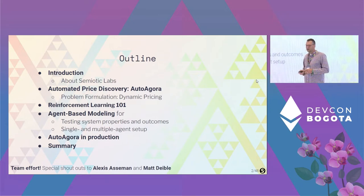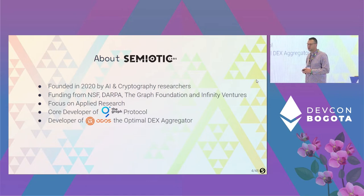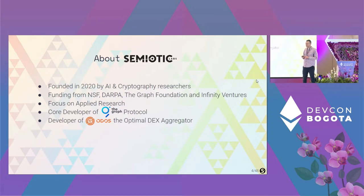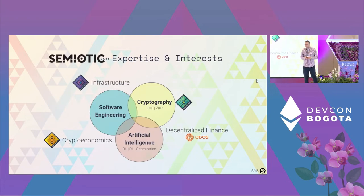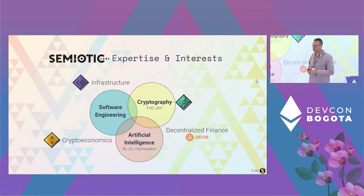Semiotic Labs was founded in 2020 by AI and cryptography researchers. We focus on applied research and are one of the core devs of The Graph protocol. We are also developers of Oros, the optimal DEX aggregator. Our core expertise combines cryptography with AI, plus software engineering, and we focus mostly on building infrastructure and crypto economics — which is what today's talk is about.